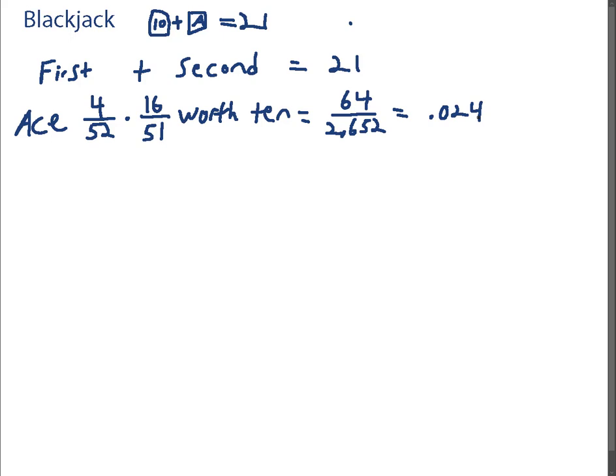Alternatively, you could be dealt your card that's worth 10 first, and then an ace next. So, you have another option, and now we said there are 16 cards worth 10, but if it's a brand new deck, there are 52 cards to choose from. And then after you've dealt that first card, your next card is an independent draw, so we could just multiply their probabilities. There are 4 aces, but now there are only 51 cards left in the deck, and that's going to equal 64 over 2652. That equals .024.